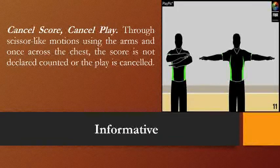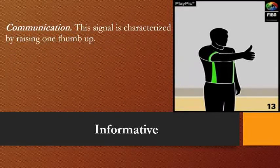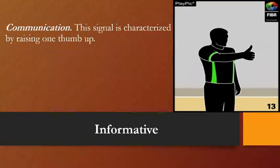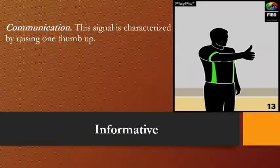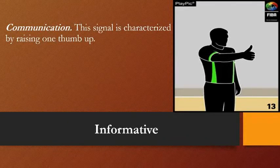In any violation, the play must be cancelled once a score has been delivered or was successful. Another informative signal is communication, characterized by raising one thumb up. This is a communication between the two referees, the table official, and also to the player. For example, if a player is inbounding the ball after a violation or a foul, the referee signals with a thumb up to his partner to indicate the ball is alive and the time is alive.